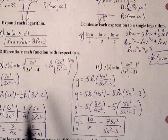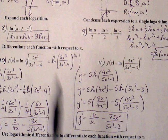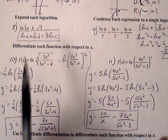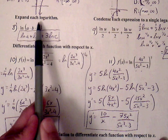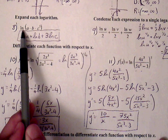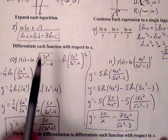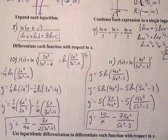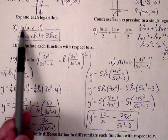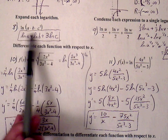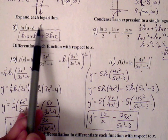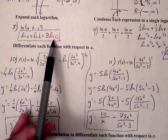Number eight: expand each logarithm. To expand, we use the power, quotient, and product properties. When you expand a logarithm, you take one log statement and rewrite it as separate log expressions. So ln of a·b·c³ can be written using the product property as ln of a plus ln of b plus ln of c³, and finally the exponent comes down to the front: 3 ln of c.